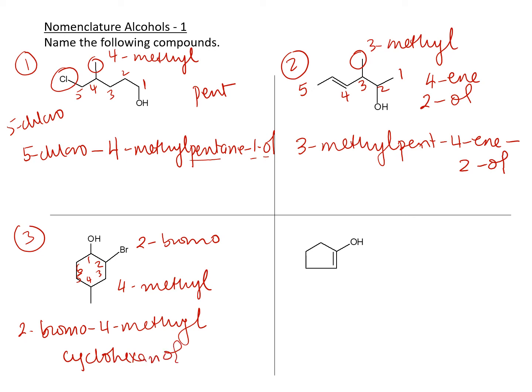You don't have to say 1 because it's understood that your numbering started from the alcohol. You would say 1 if there was more than one alcohol or if there was another thing attached to the first carbon. But otherwise, since your alcohol is on the first carbon, it's understood your numbering started from there.